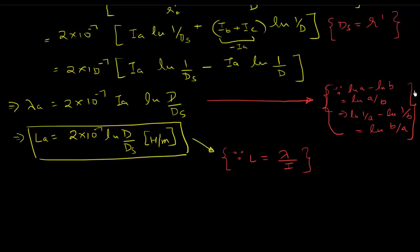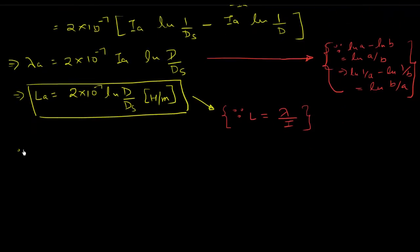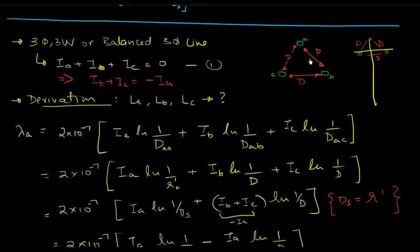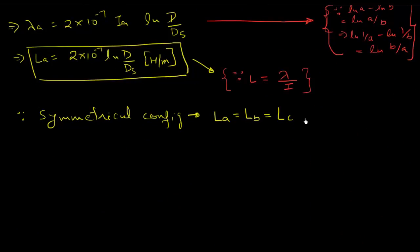And this uses this identity right here. And because this is a symmetrical system, because of symmetrical configuration, what we have is La is equal to Lb is equal to Lc. Because if you use this formulation in any which way, you're going to get the distance of d and the radius is all the same, so Dsa is equal to Dsb is equal to Dsc. And therefore you have this La is equal to Lb is equal to Lc, and this is the inductance of a three-phase symmetrical line.